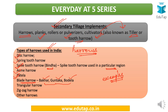All three — bakhar, guntaka, and bodela — fall under the category of blade harrows, but there are certain variations which we shall look at when discussing the chapter in detail. There is also triangular harrow, zigzag harrows, and other harrows, though we are not mentioning everything here. Kindly be aware of these names as well.